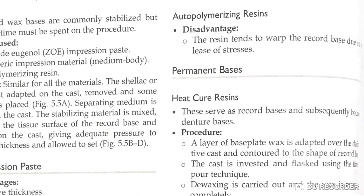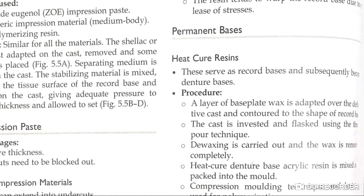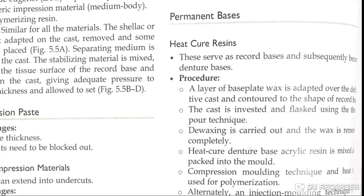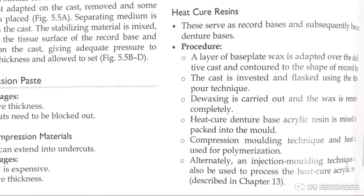Autopolymerizing resin is warped in the record base due to release of stresses. For the permanent base, heat cure acrylic resin is used — this record base subsequently becomes the denture base. The procedure involves a layer of base plate wax adapted to the cast, contoured to the shape of the record base, then placed in the flask using a three-pour technique, followed by de-waxing.